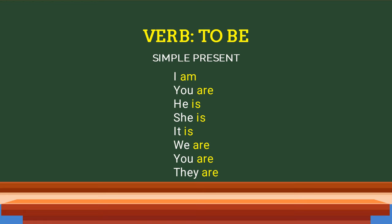Verb to be, simple present: I am. You are. He is. She is. It is. We are. You are. They are.